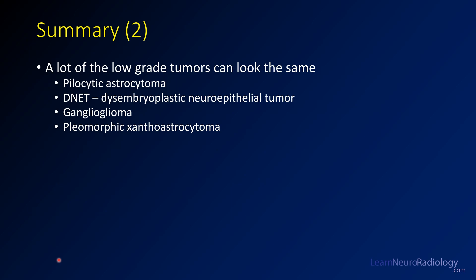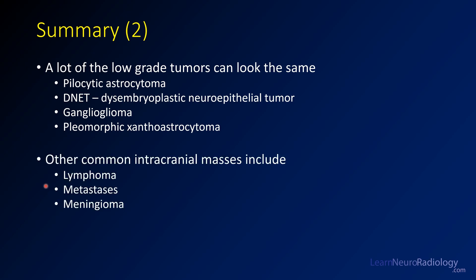A lot of the low-grade tumors can look the same — pilocytic astrocytoma, DNET, ganglioglioma, and PXA can all be very similar in appearance. Use imaging features to try to help make a differential, but ultimately the distinction may not make a significant difference. There are also other common intracranial masses — lymphoma, metastases, and meningioma — that you have to be on the lookout for, as they can mimic primary brain tumors.